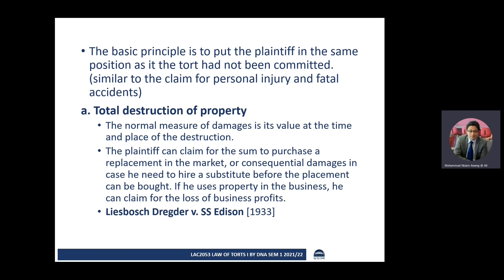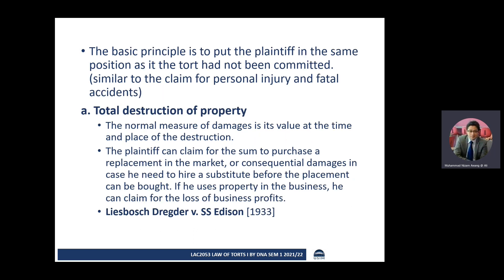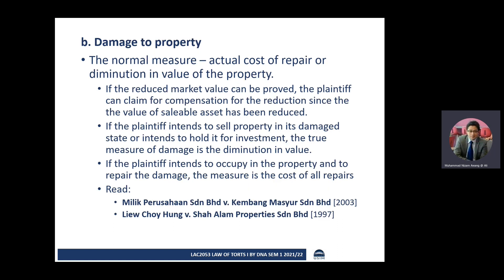When there is damage to property, the first category is total loss. Where the property can still be repaired, the amount of damages the plaintiff can claim will be the actual cost of repair, or the diminution in value of the property as a result of the damage — for instance, if a car is damaged the value drops. The plaintiff can calculate how much the value has diminished as a result of the damage. If the reduced market value can be proved, the plaintiff can claim compensation for the reduction, since the value of the sellable asset has been reduced.